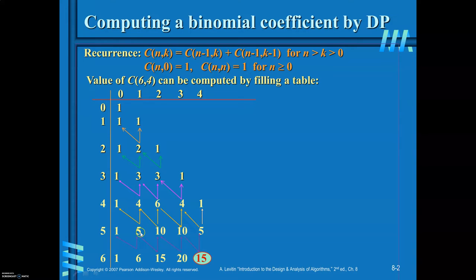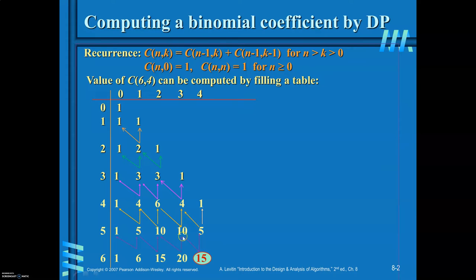For the 6th row: C(6,1) = 6. For C(6,2), previous row same column is 10 and previous row previous column is 5, so 5 + 10 = 15. C(6,3) = 10 + 10 = 20. For C(6,4), previous row same column is 5 and previous row previous column is 10, so 5 + 10 = 15. This is the value we are required to find. To compute C(N,K), you must fill all intermediate values.